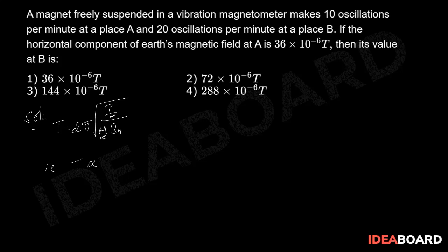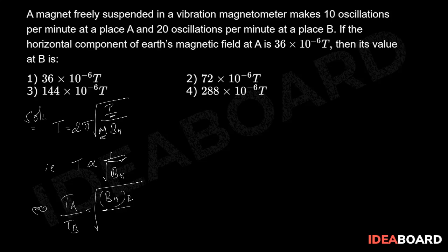That is, we can write that the time period of oscillation is inversely proportional to √BH. Or we can write: TA divided by TB — the ratio of the periods of oscillation — equals the square root of the inverse ratio of the horizontal components, that is √(BHB / BHA).